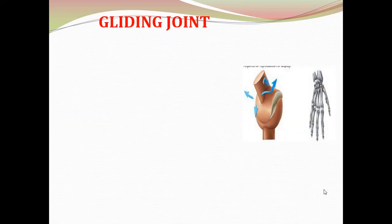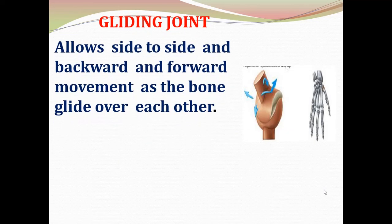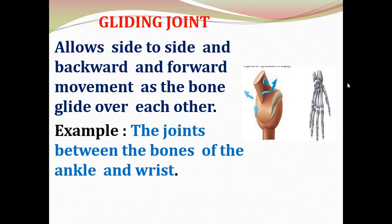The next joint is the gliding joint. Gliding joints allow side-to-side and backward-and-forward movement as the bones glide over each other. An example is the joint present between the bones of the ankles and wrist.